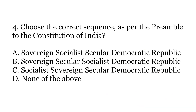The fourth question is: choose the correct sequence as per the preamble to the constitution of India. You have to choose the correct sequence in which the keywords appear in the preamble. The options are A. Sovereign Socialist Secular Democratic Republic, B. Sovereign Secular Socialist Democratic Republic, C. Socialist Sovereign Secular Democratic Republic, or D. None of the above.